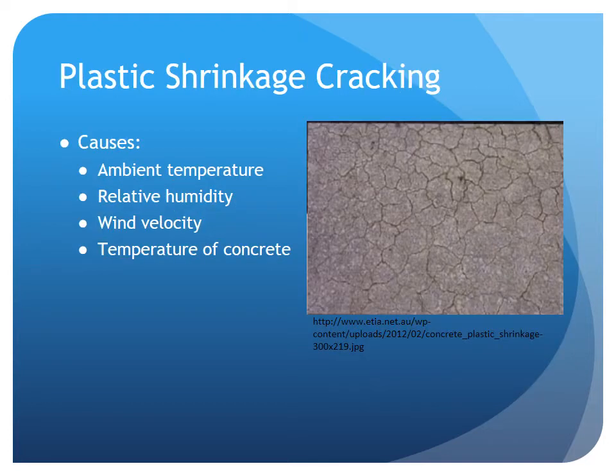Next is plastic shrinkage cracking. This occurs when the concrete is experiencing rapid loss of moisture caused by ambient temperature, relative humidity, wind velocity, and the temperature of the concrete. When evaporation rate exceeds the rate of water produced by the bleeding process, the water disappears and the top surface of the concrete begins to shrink. Tensile stresses develop in the weak, stiffening plastic concrete, resulting in shallow cracks of varying depth.